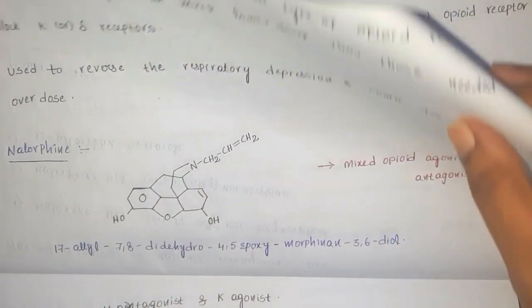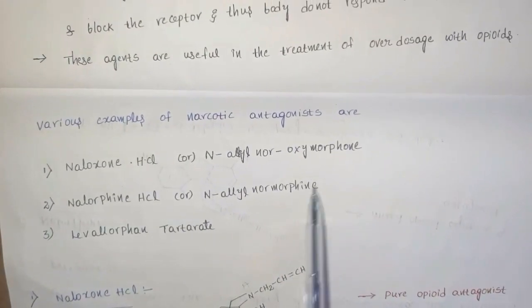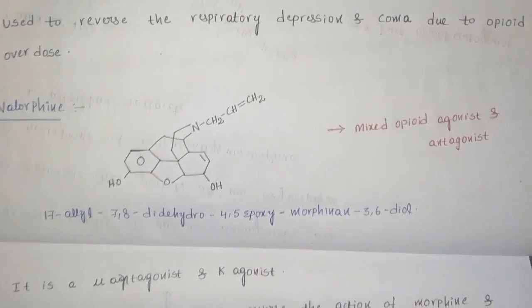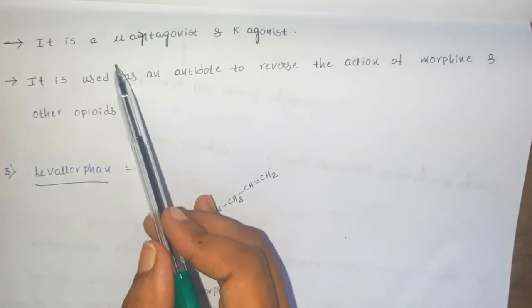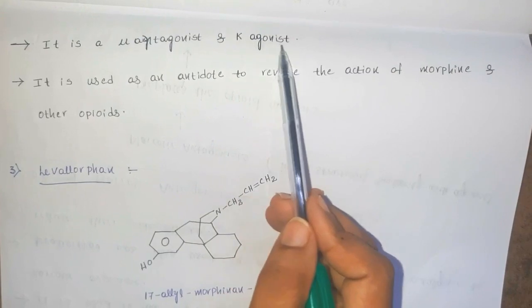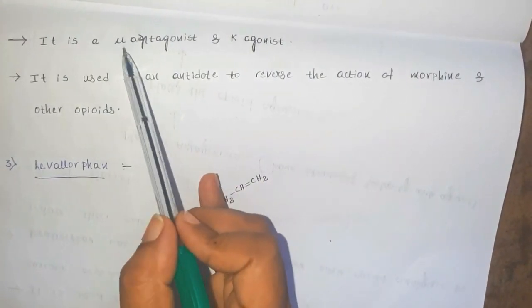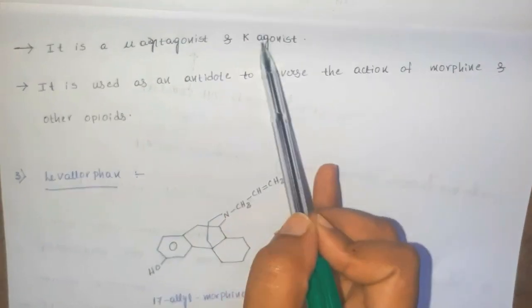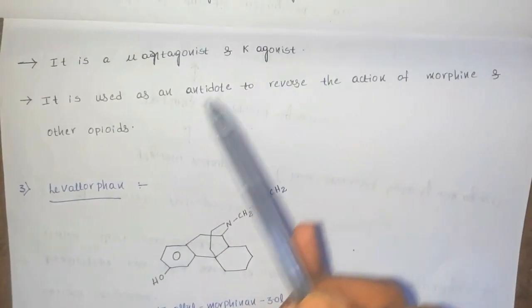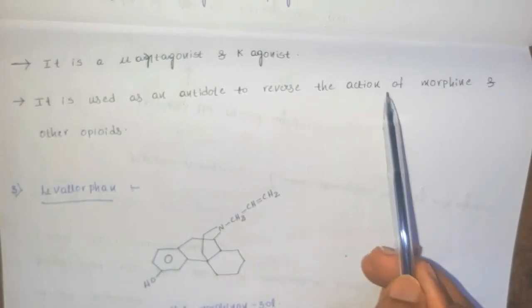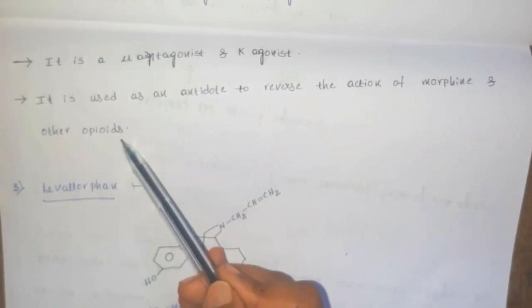Nalorphine is also called as N-allyl nor-morphine. It comes under the mixed opioid agonist and antagonist class. It is a mu antagonist and kappa agonist, so it has a mixed action — acting as a mu antagonist and kappa agonist. It is used as an antidote to reverse the action of morphine and other opioids.